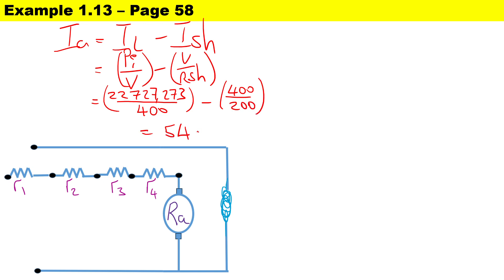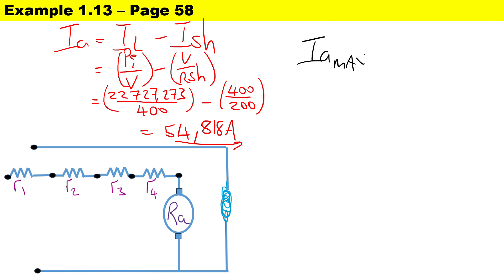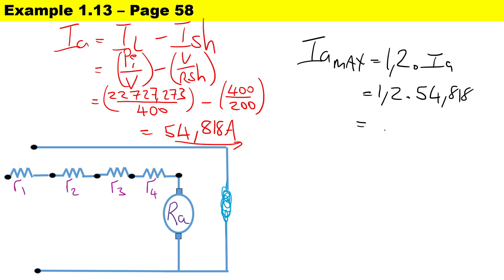Now that we have the armature current, we can calculate the maximum armature current this machine will experience. Ia_max equals 1.2 times Ia, so it is 1.2 times 54.818, and we end up with a maximum armature current of 65.782 amperes.